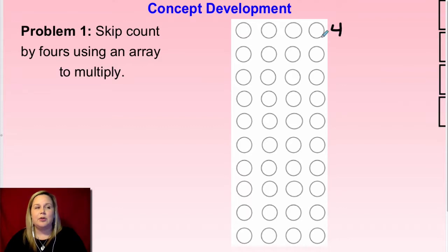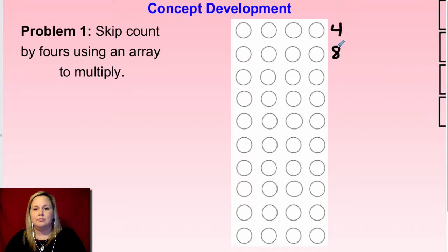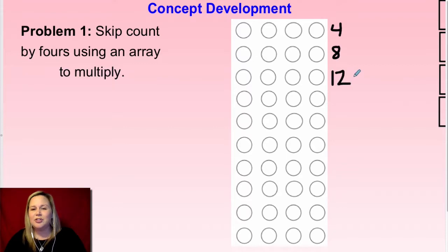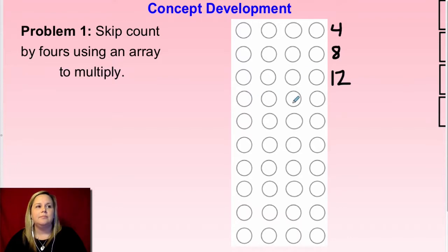Let's keep going. We have four — you're going to count on from here: four, hum, eight. So we're at eight, hum, twelve. I want you to pause the video and fill in the rest of the array template. Keep going: at 12 here you would go 16. Go ahead and fill the rest in, and once you're done click play.